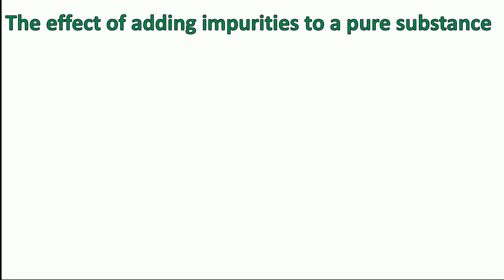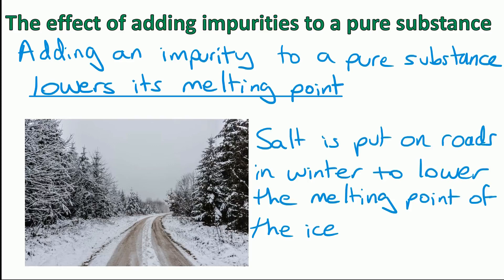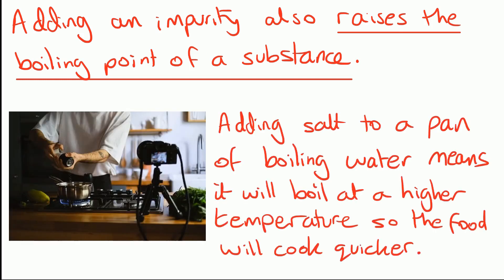One last thing to know is the effect of adding impurities to a pure substance. First, adding an impurity lowers its melting point — this is why salt is put on roads in winter, to lower the melting point of ice so it might melt at minus three degrees rather than zero degrees, melting earlier in the day before temperatures warm up. Adding an impurity also raises the boiling point — if you add salt to a pan of boiling water while cooking, it will boil at a higher temperature, so food cooks quicker. Pure water boils at 100 degrees, but with salt added it may boil at 105 degrees.